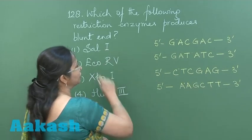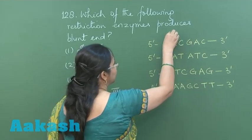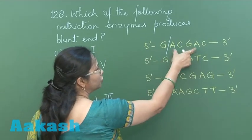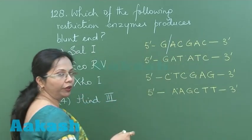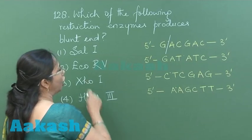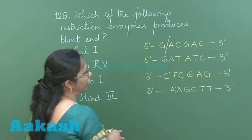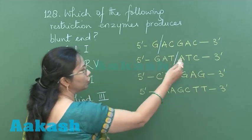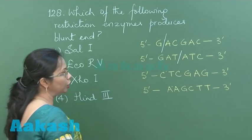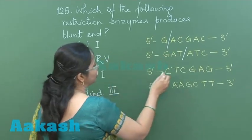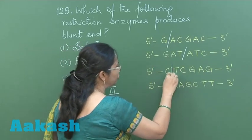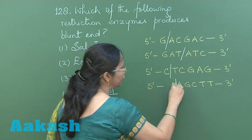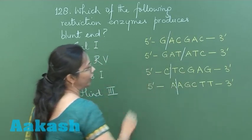For SAL1, the enzyme cuts between G and A, so that part will be unpaired — that would be a flush end. For ECOR5, the cut is in the middle, so the two ends will be equal. In XHO1, the cut is between C and T, and in HINDI3, it is between the two adenines.